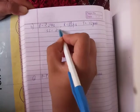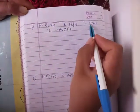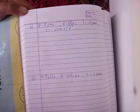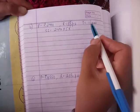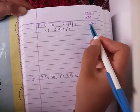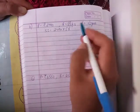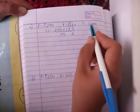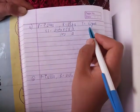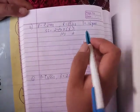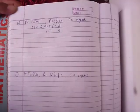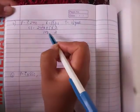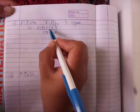Next part B. Simple interest, principal into rate into time. Time is one and a half years. One and a half years is 3 by 2. 3 by 2 upon hundred. 3 by 2, 2 into 1, 2 and 3 by 2. Zero zero cancel.